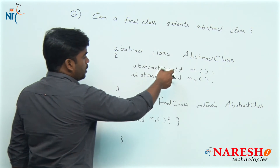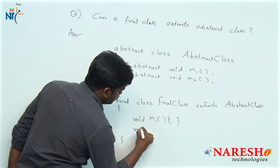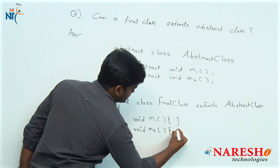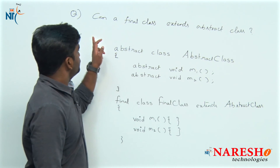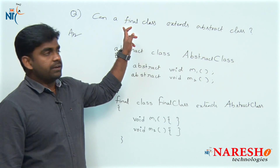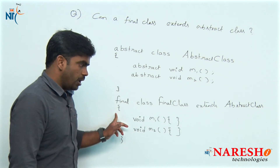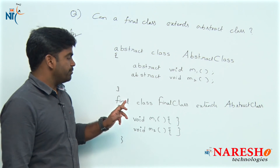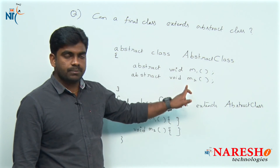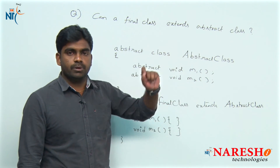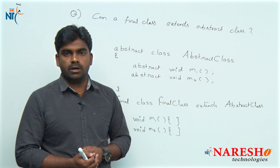All the specifications available in the abstract class must be overridden in the final class. So the answer is: yes, a final class can extend an abstract class, but the final class must override all the abstract methods of the abstract class, because one more extension of the final class is not possible.